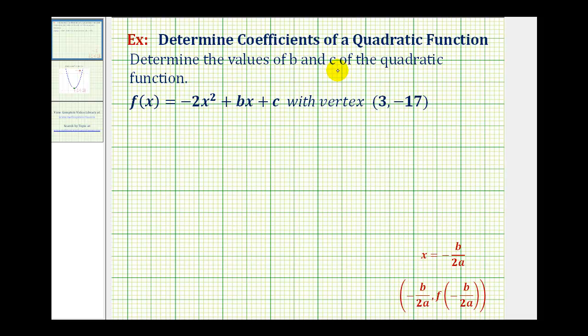In this problem, we're asked to determine the value of b and c for our quadratic function that has a vertex with an x coordinate of three and a y coordinate of negative seventeen.